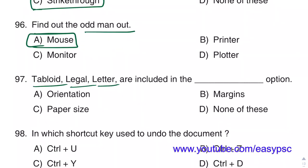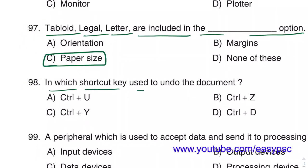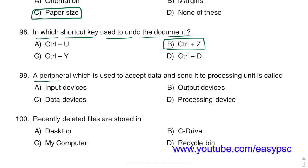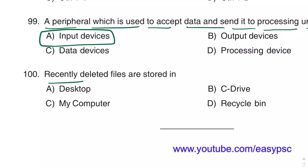Tabloid, legal, and letter are included in the paper size option. The shortcut key used to undo a document is Ctrl + Z. A peripheral which is used to accept data and send it to the processing unit is called an input device. Recently deleted files are stored in the Recycle Bin.